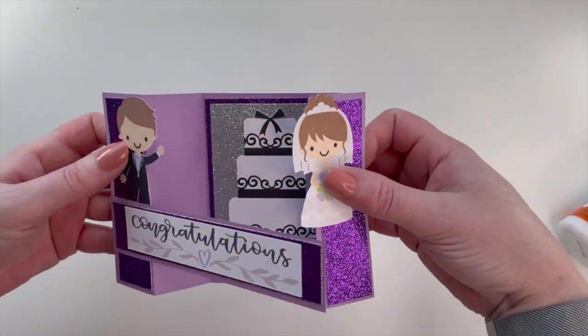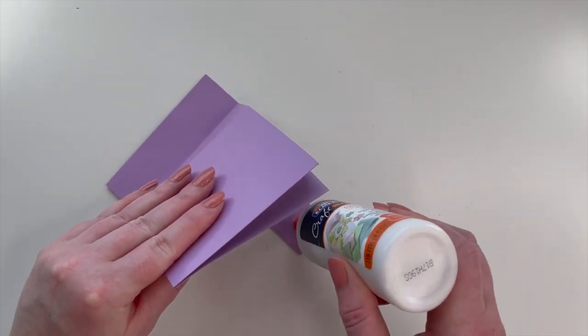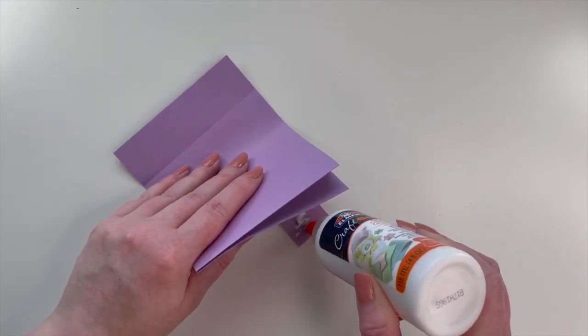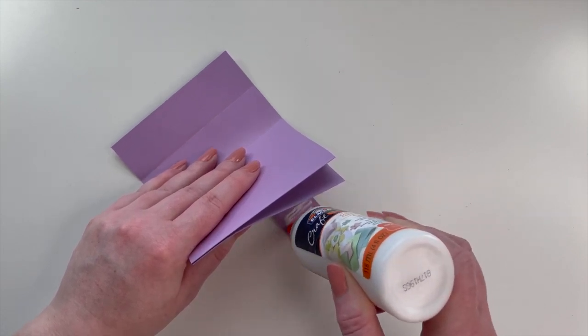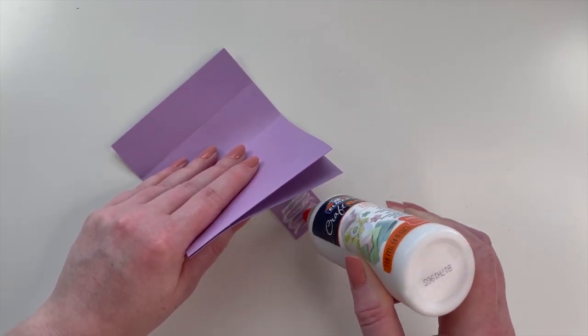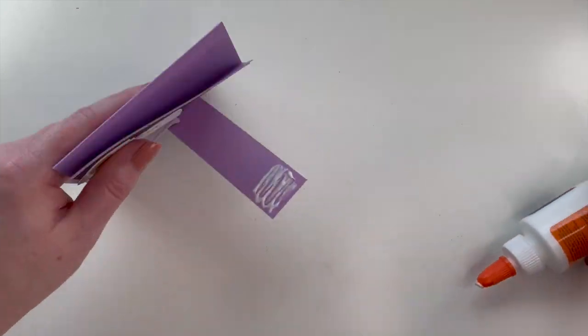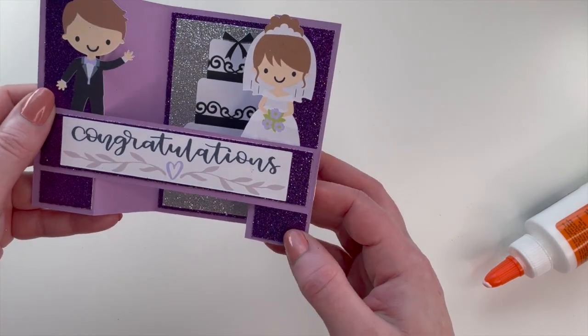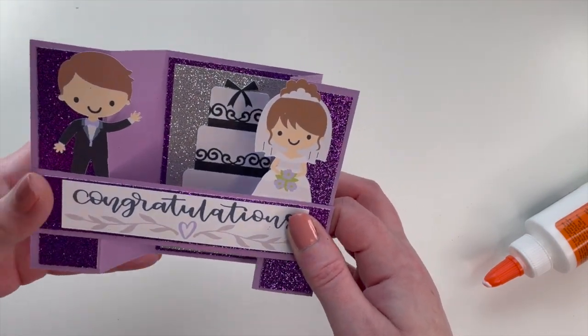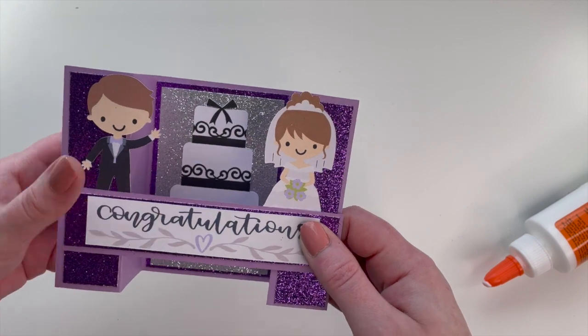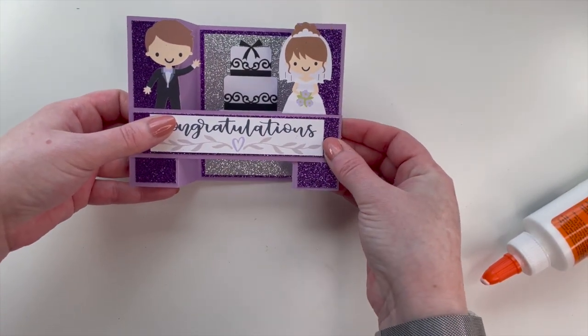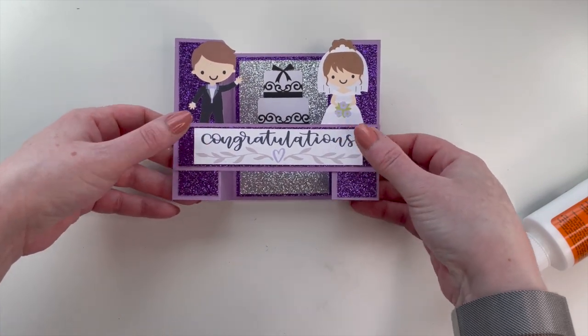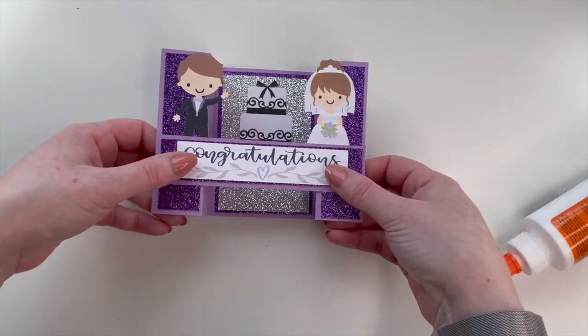We will glue the other side. So this one gets a little trickier. Now we'll glue it over there. There we go, we'll let that dry and then we'll do the final reveal.